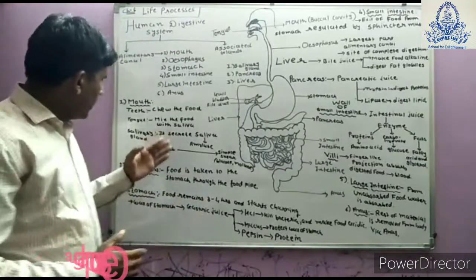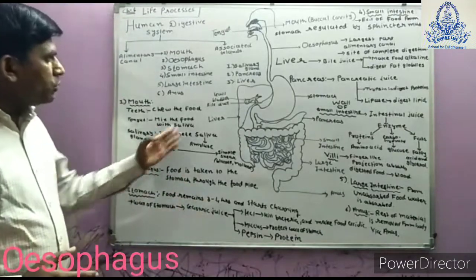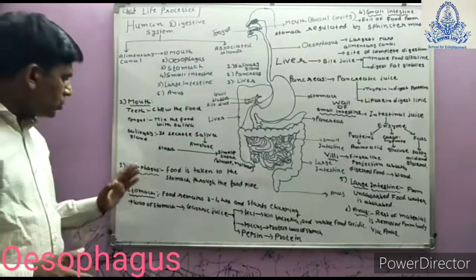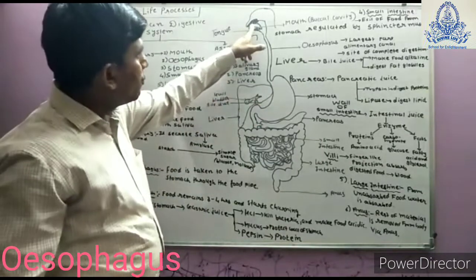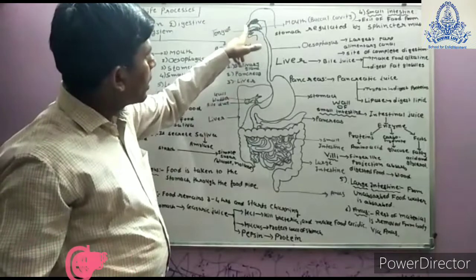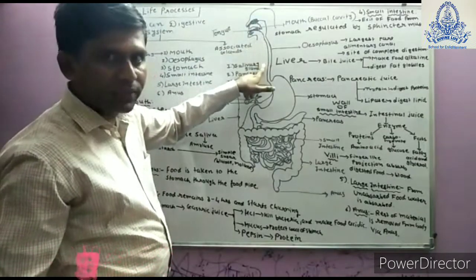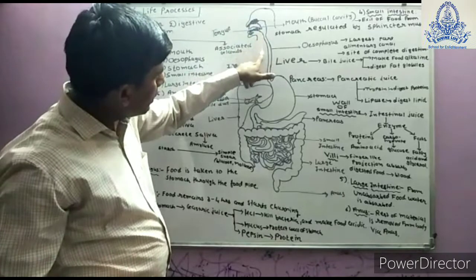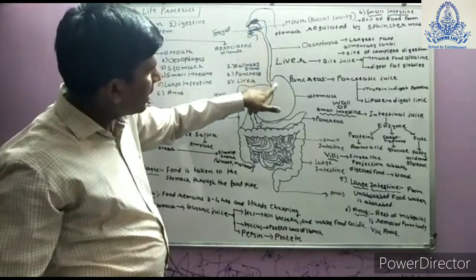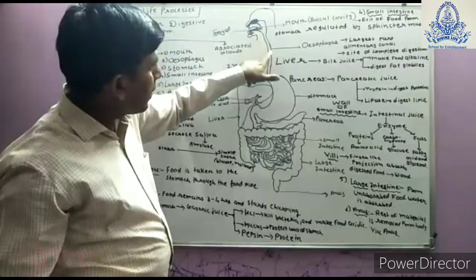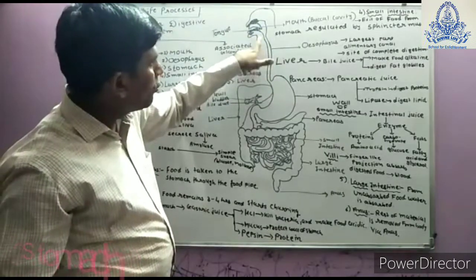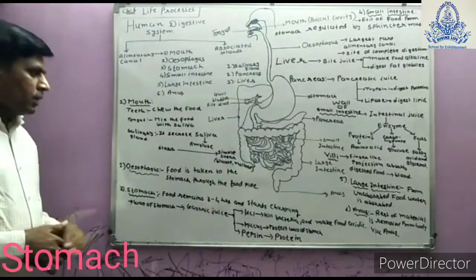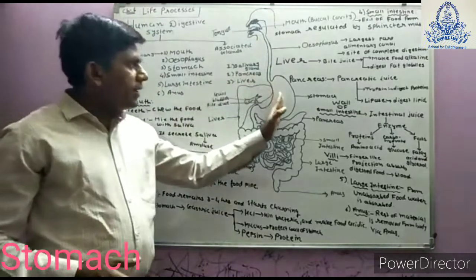After that, food enters the stomach through the esophagus. The esophagus, also called the food pipe, connects the mouth (buccal cavity) to the stomach. Food travels from the mouth into the stomach through this pipe.